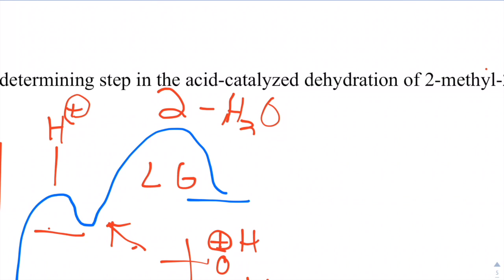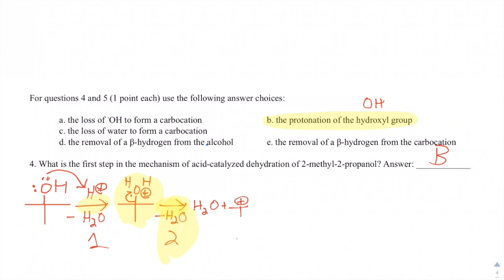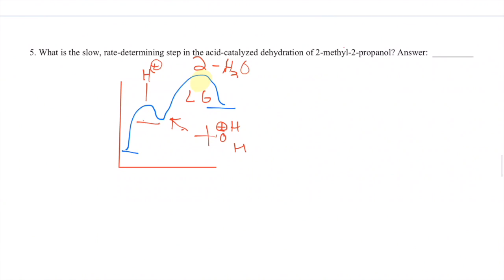And since we lose that, this takes way more energy. And that's going to be our rate-determining step, which is the same as C, or our loss of water to form a carbocation, which is the second arrow below. So we can say our answer is C because it has a higher activation energy or more energy to produce that step.